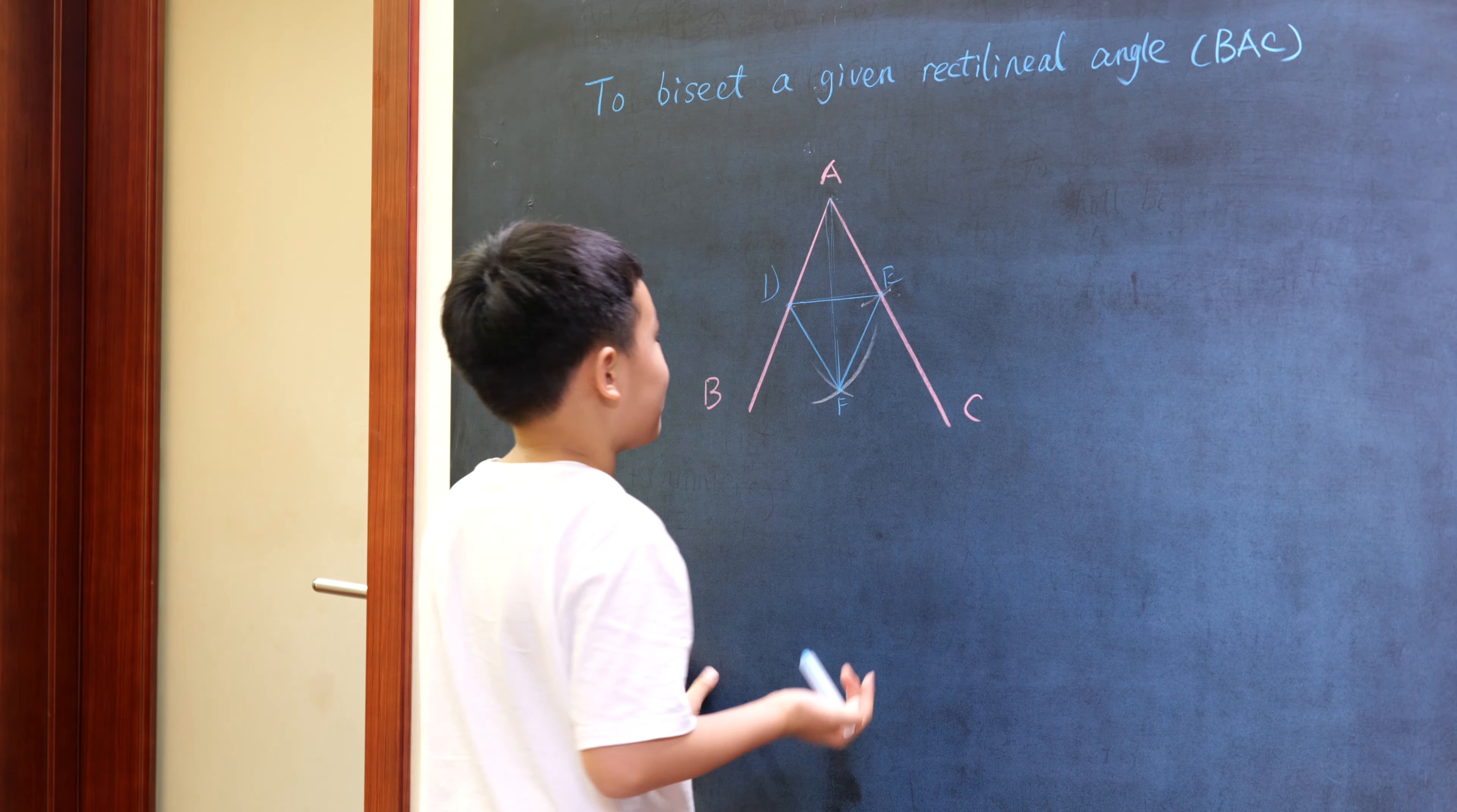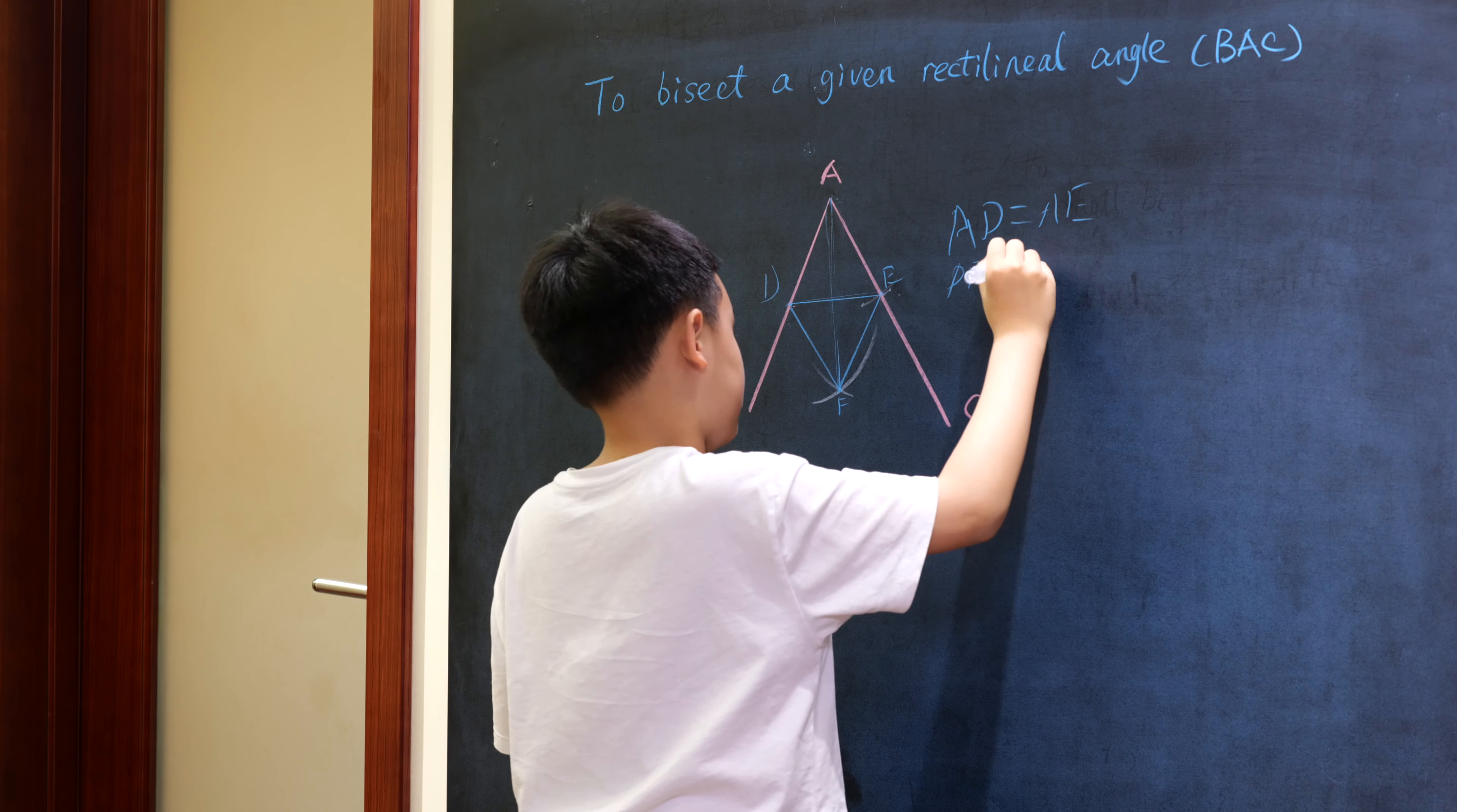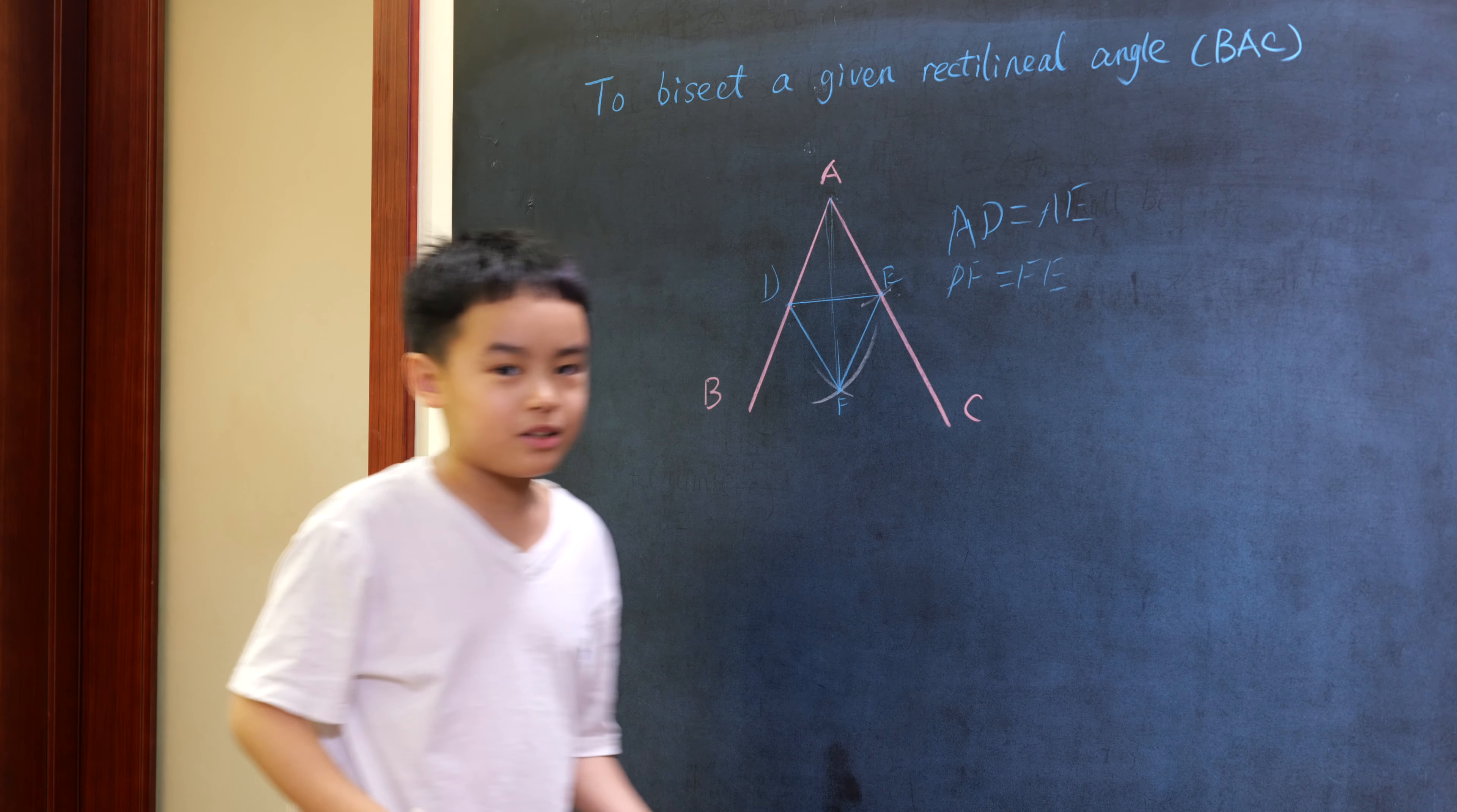First, because AD equals AE and DF equals FE, since triangle DEF is equilateral, and FA is common to both triangles.